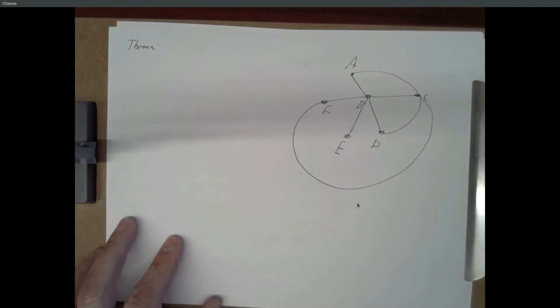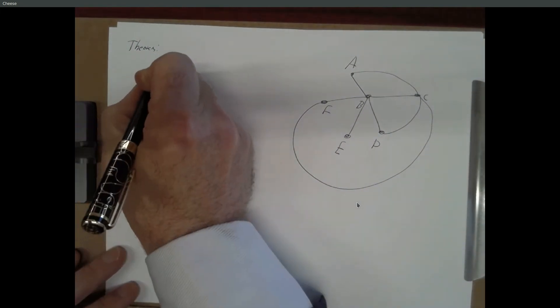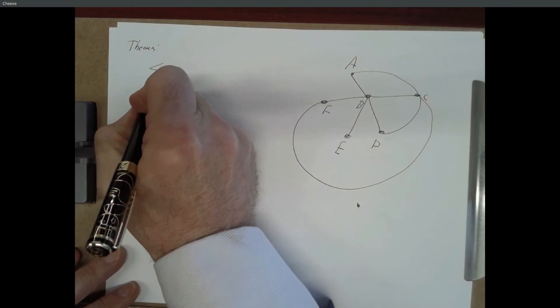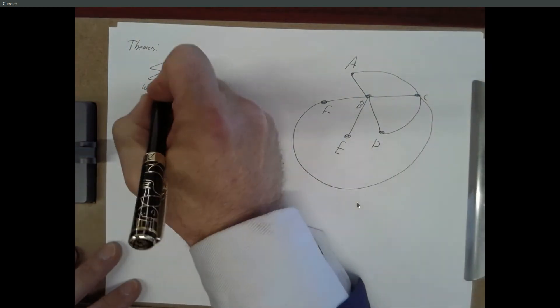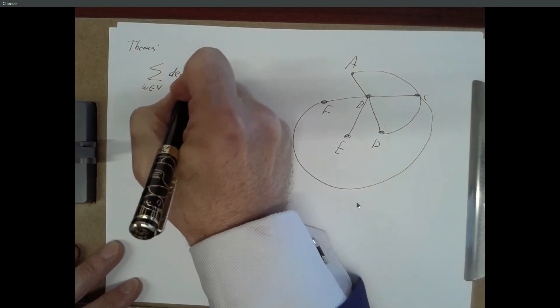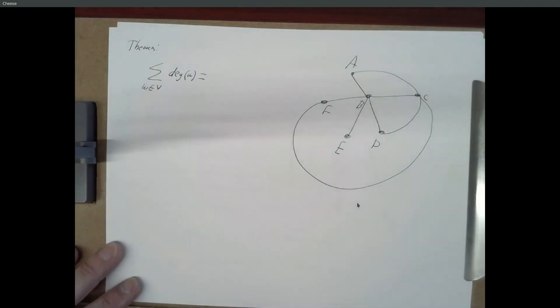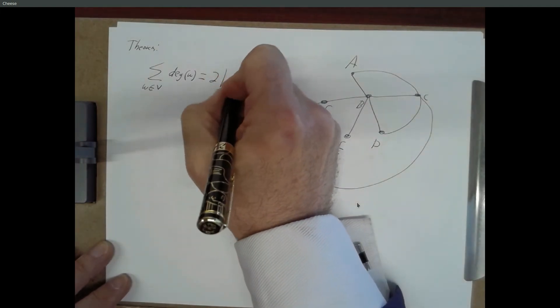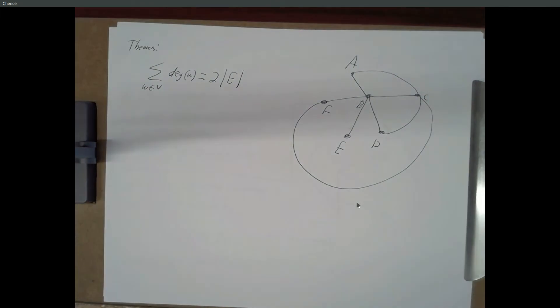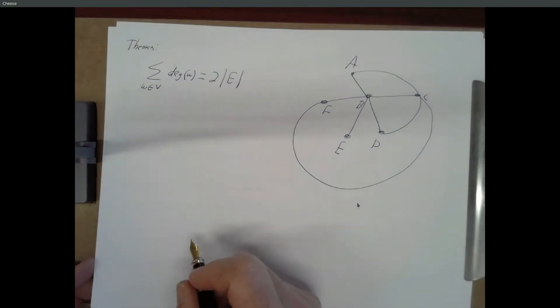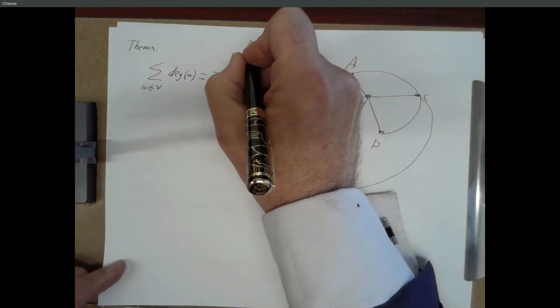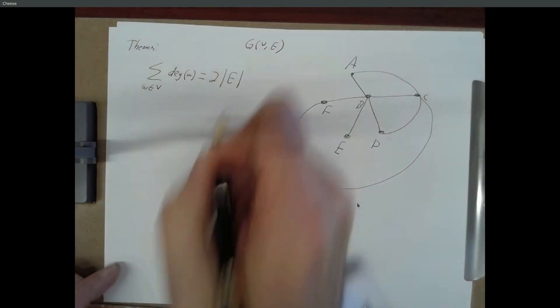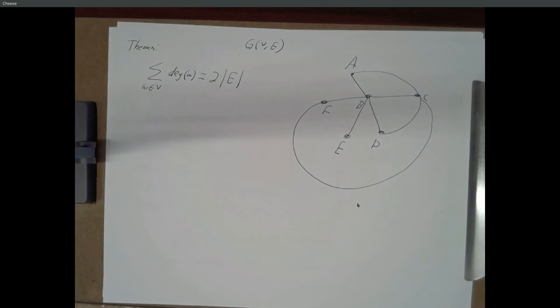Alright, so that makes this theorem a little easier to write. So, the sum over all vertices of the degrees equals two times the number of edges. So, this is for a graph whose vertices are V and whose edges are E. So, the sum of the degrees of all vertices ends up being equal to twice the number of edges.